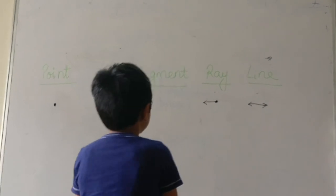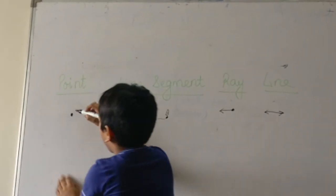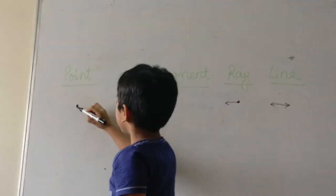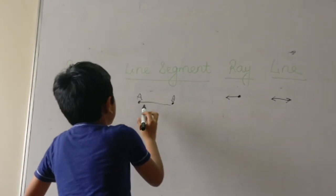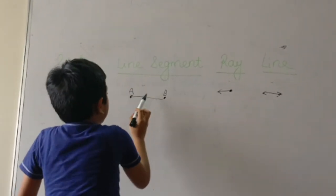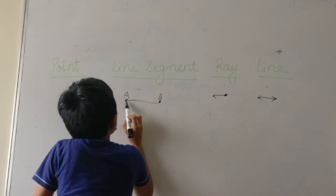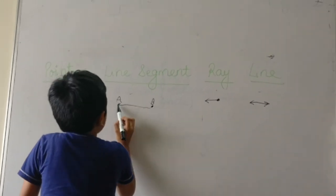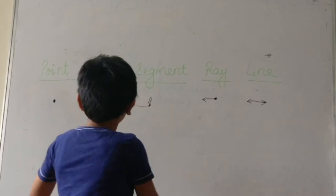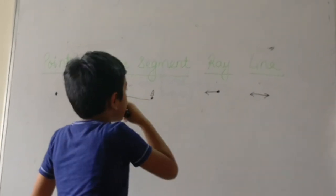Let's revise. Point means a dot, single dot. And line segment means dot. You join both the dots, it will become line segment.